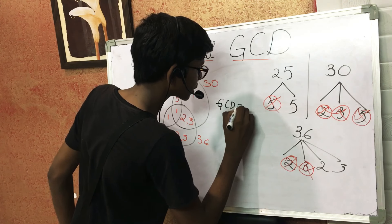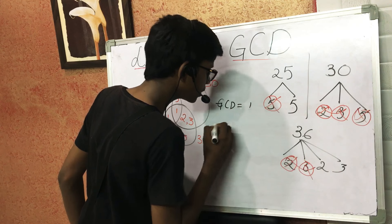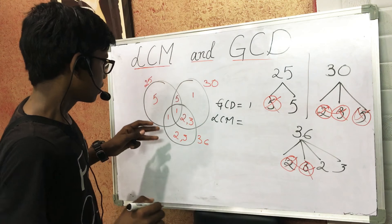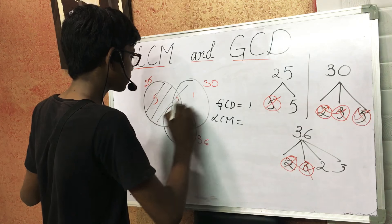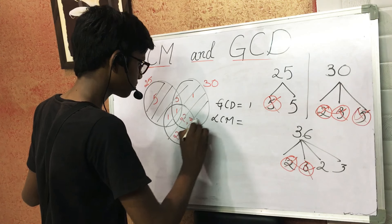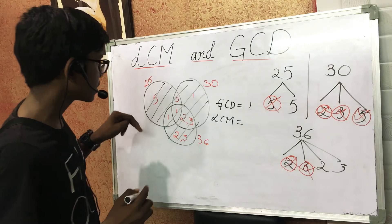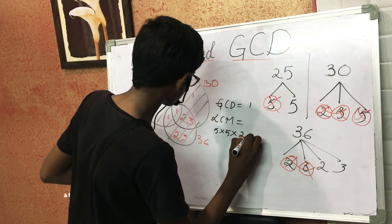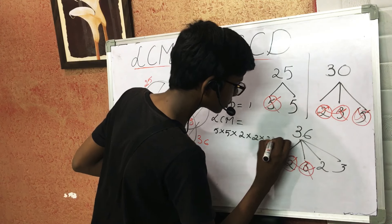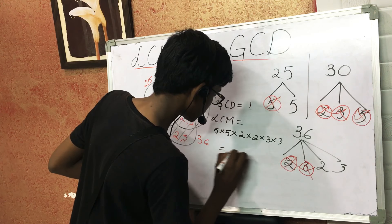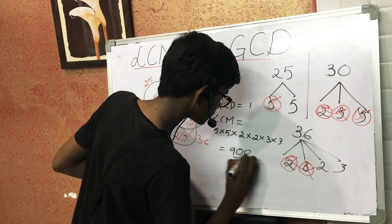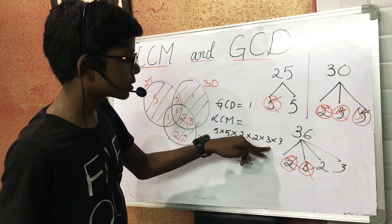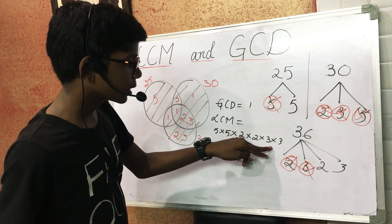GCD will be the common factor of all three numbers, which is 1. LCM will be the product of all numbers in the shaded region: 5 × 5 × 5 × 3 × 2 × 2 × 3 × 3. The answer will be 900, since 5 × 5 = 25, 25 × 2 = 50, 50 × 2 = 100, 100 × 3 = 300, 300 × 3 = 900.